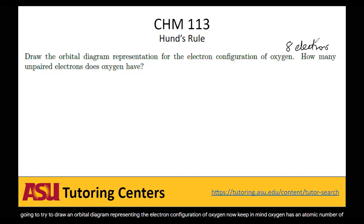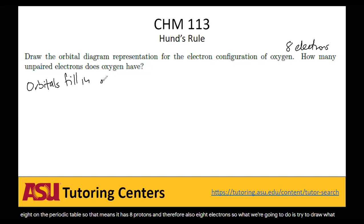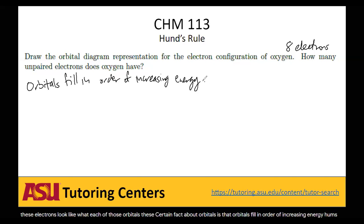We're going to try to draw what these electrons look like — what each of those orbitals looks like. An important fact about orbitals is that orbitals fill in order of increasing energy. So let's look at the various orbitals we'll have, and let's start with our smallest possible orbital.